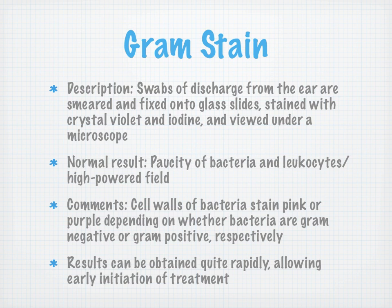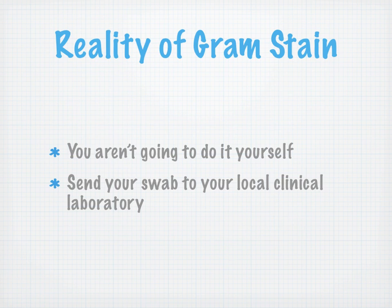Gram stain: we take a swab of the discharge, smear it onto and fix it onto a glass slide, and stain it with crystal violet and iodine. It's viewed under a microscope — what we don't want to see is bacteria. The normal result is going to be a paucity of that with leukocytes per high-powered field. Cell walls of bacteria stain pink or purple depending on whether bacteria are gram-negative or gram-positive, respectively. Results can be obtained rapidly, allowing initiation of early treatment. In reality, you won't do it yourself — you'll send your swab to your local clinical laboratory.